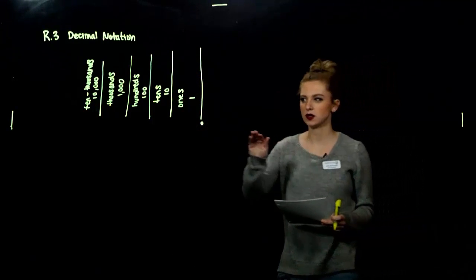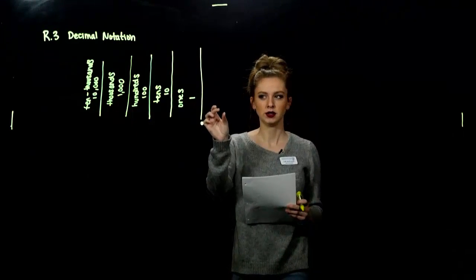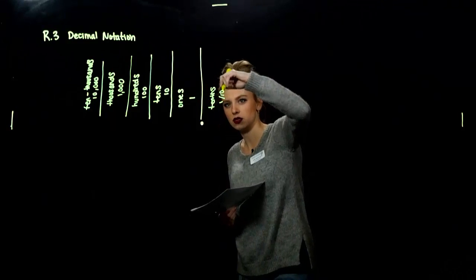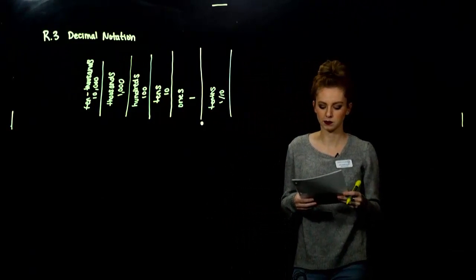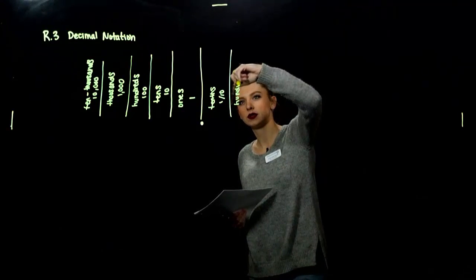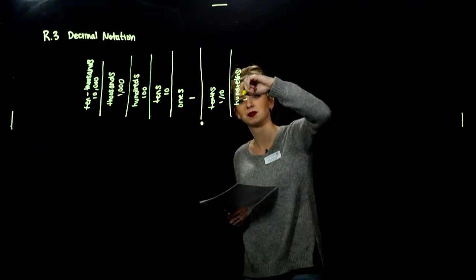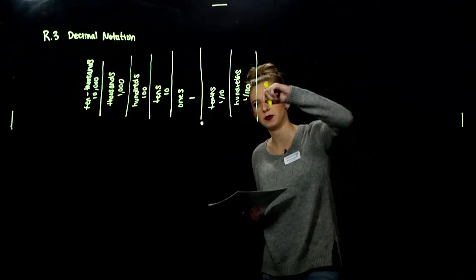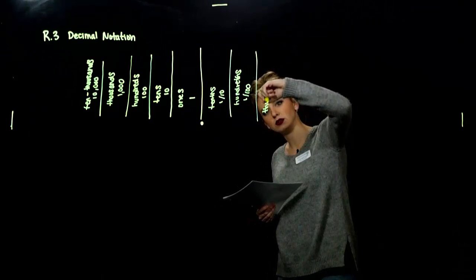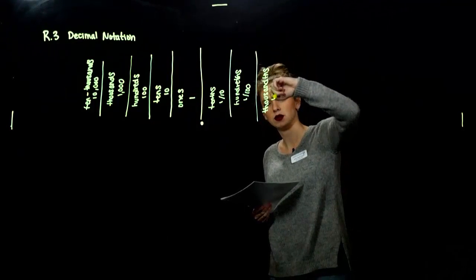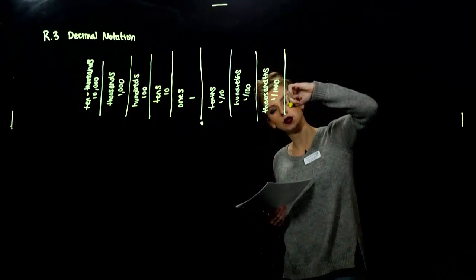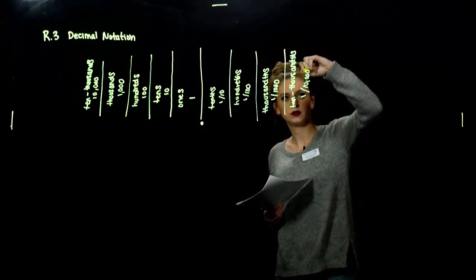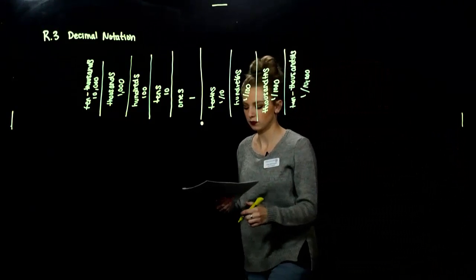What about to the right of the decimal? Those are the fractional parts of a number. The first place is the tenths — one tenth of a whole number sits at that digit place. Next is hundredths — one one-hundredth of a whole number. Then thousandths — one over one thousand. And last, ten-thousandths — one over ten thousand. We could keep going in that direction as well, dividing by a factor of ten each time.